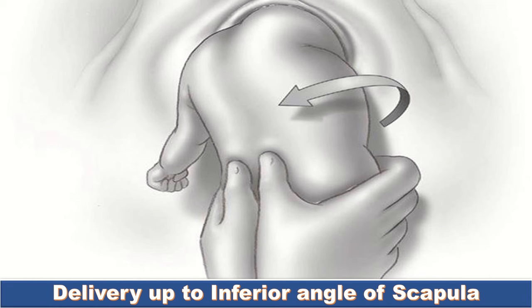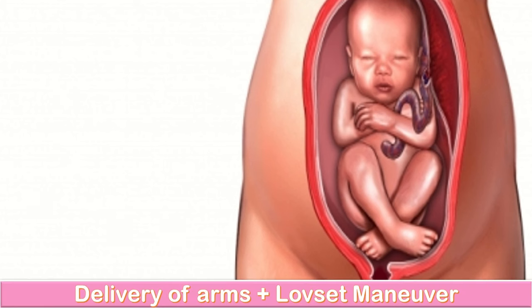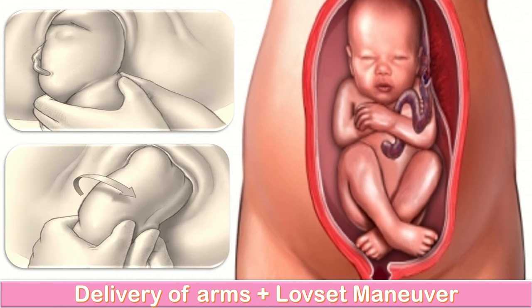I will assess the attitude of the arms. If they are flexed, they will deliver spontaneously or I will hook them out. If they are extended, I will perform Lovset's maneuver, rotating the body 180 degrees keeping the back anterior with downward traction, bringing the posterior shoulder anteriorly under the pubic symphysis and delivering it. I will then rotate in the opposite direction keeping the back anterior to deliver the other shoulder.